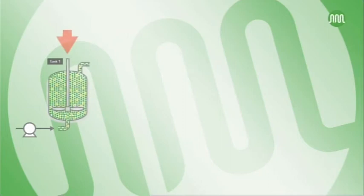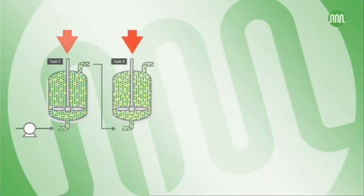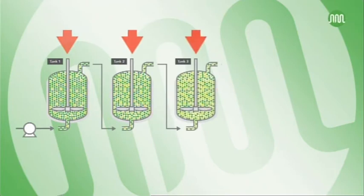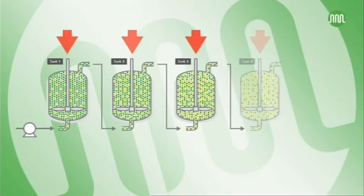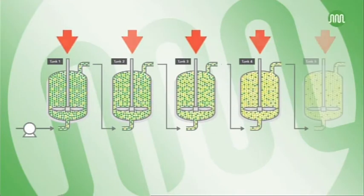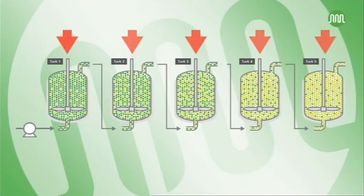The problem of backmixing observed in a single vessel can be solved by using multiple stirred tanks in series, and the more vessels used, the better. For a broad range of applications, such as reactions of a minute or longer, or where more than one phase is present, multiple stirred tanks are usually the most practical solution.